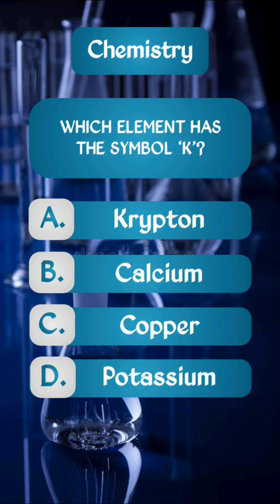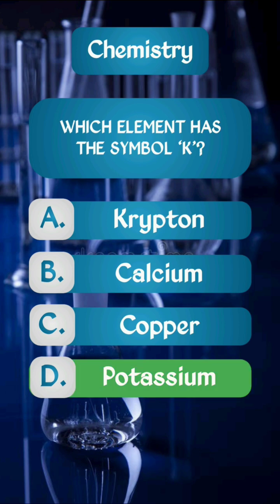Question 2. Which element has the symbol K? The right answer is option D: Potassium.